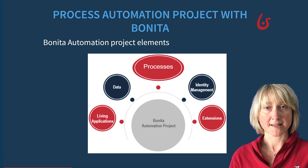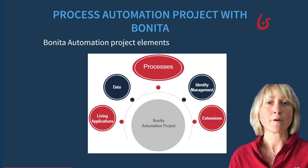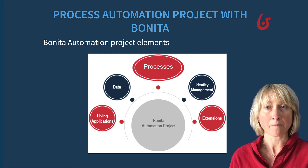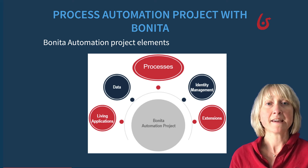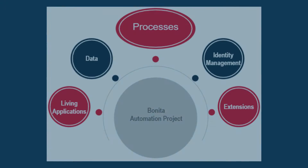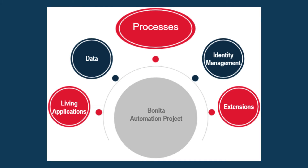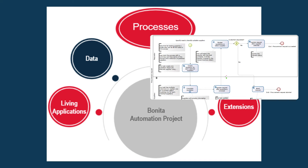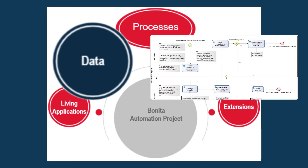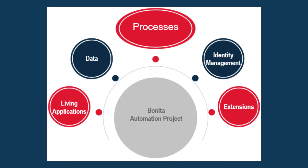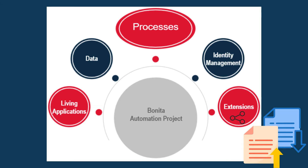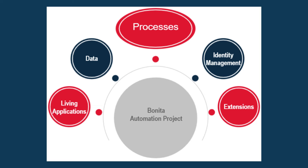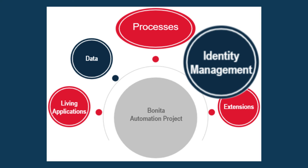In every process automation project, you are going to find more or less the same kind of elements. Here are the main elements used to build your project. First of all, these projects are based on processes within which data flow and evolve. The integration in the information system is guaranteed by extensions, and the overall interaction of humans with those processes and applications is based on identity management.